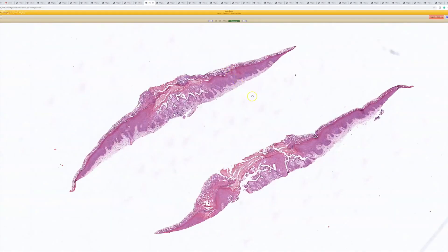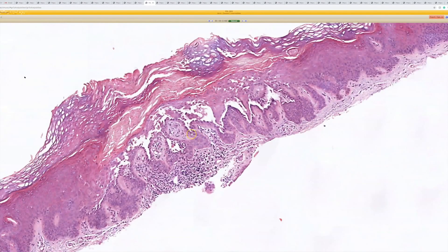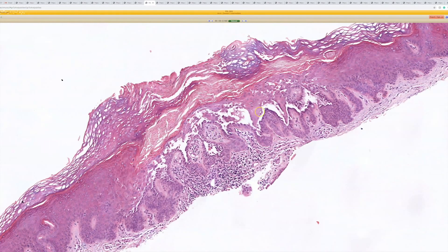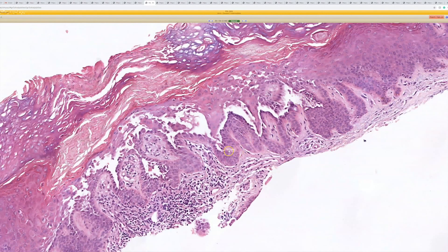Alright, next one, case 12. From low power there's acanthosis, hyperkeratosis, and there's kind of like a little papule in the middle. You can see intraepidermal acantholysis and it kind of has these papillary fronds projecting from the basal layer into the space.